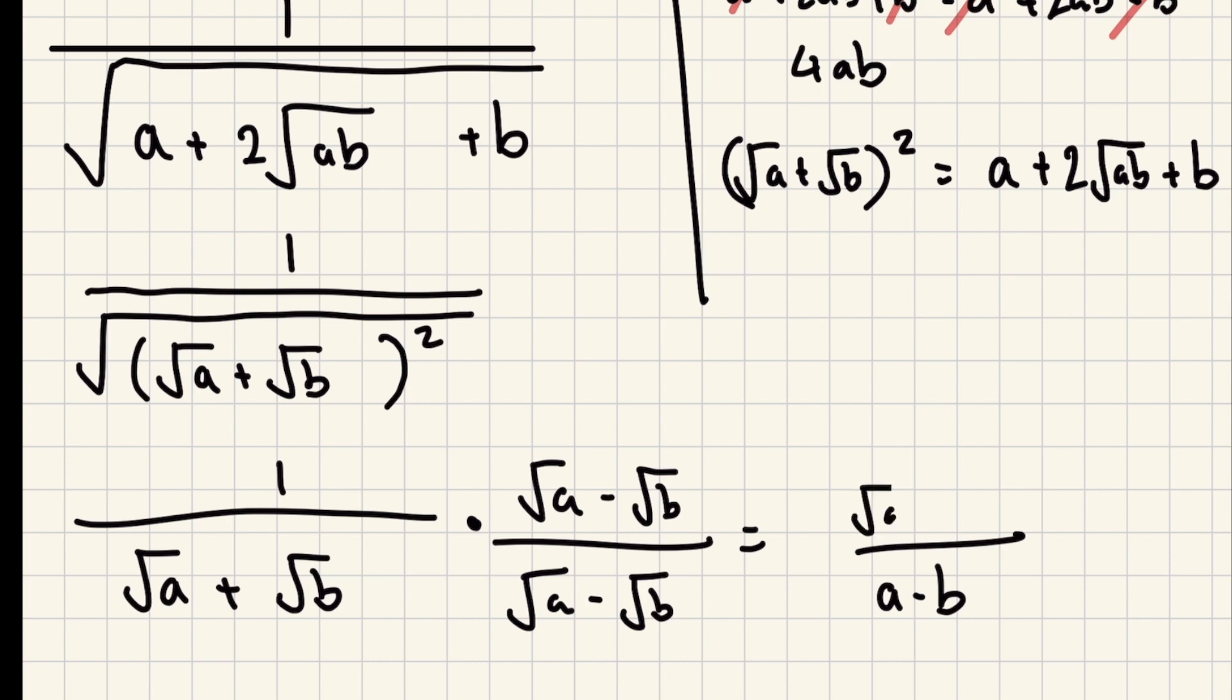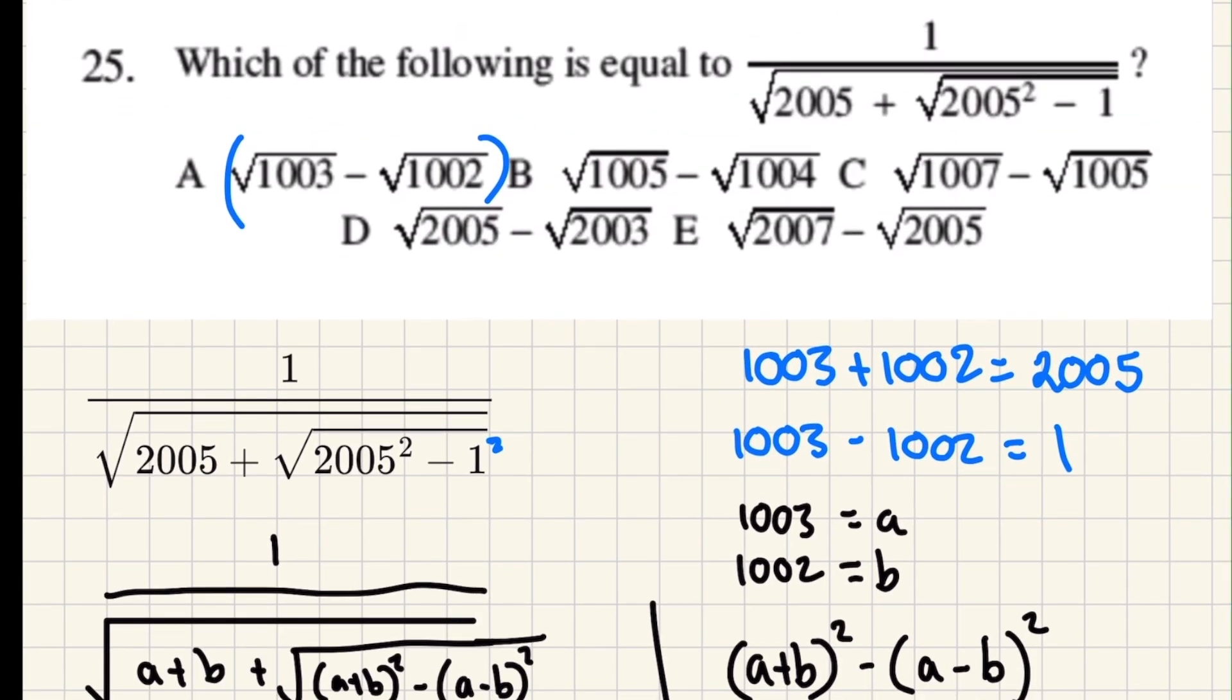It's a thousand three and a thousand and two. So a minus b is just going to be one, and then we're going to have root a minus root b all over one. And so a and b are a thousand three and thousand two, so it's going to be those. So it is A.